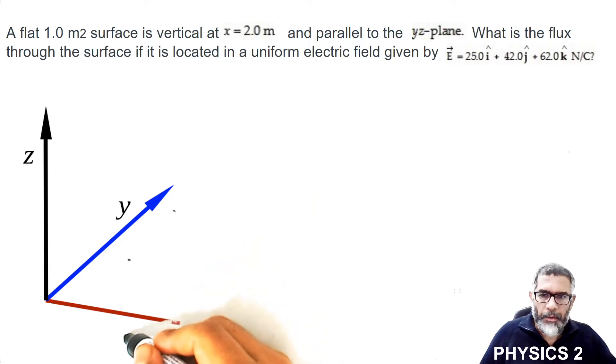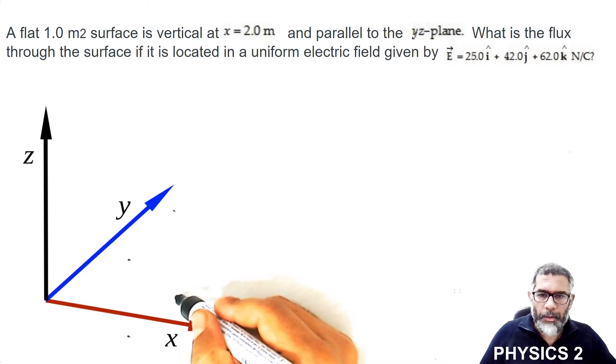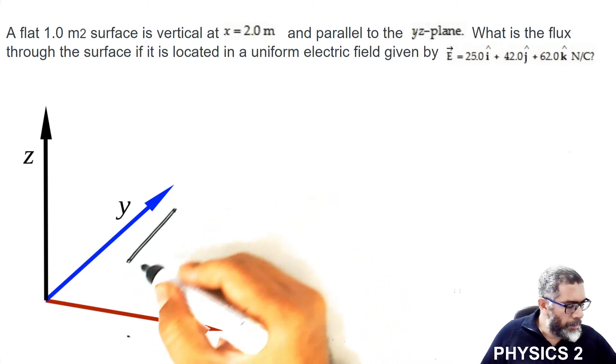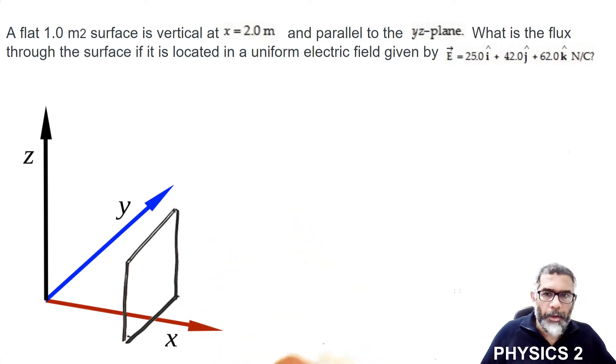Okay, and I put the dot over here and connect this. So I hope this looks like a surface parallel to the y-z plane, and it is at x equals two, crossing the x-axis at x equals two. Let's put the two over here. This is x equals two.